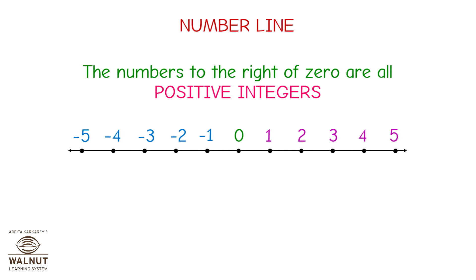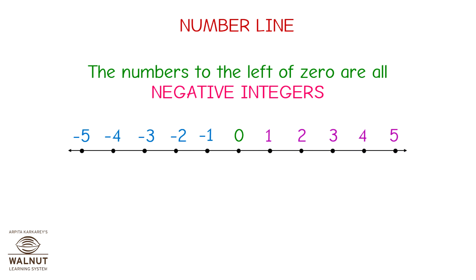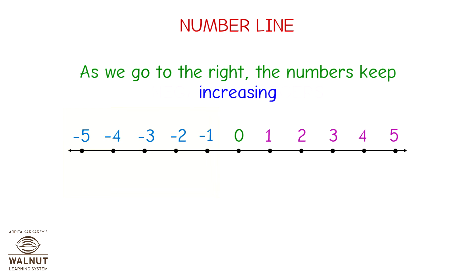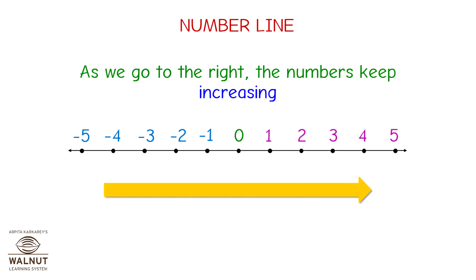The numbers to the right of 0 are all positive integers. The numbers to the left of 0 are all negative integers. As we go to the right, the numbers keep increasing.